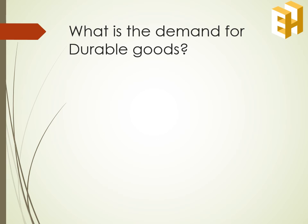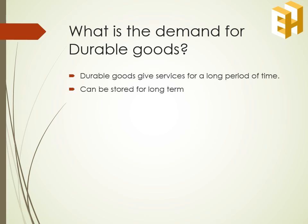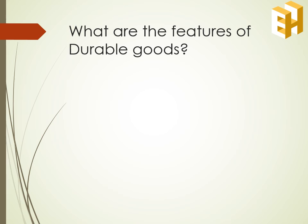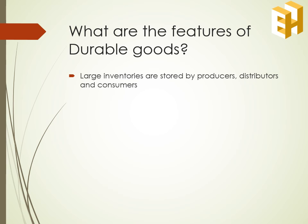What do we mean by the demand for durable goods? First, what are durable goods? These are the goods which give services for a long period of time, implying that they can be stored for the long term. As a result, they have a volatile demand, and the demand for such goods can be postponed. The features of durable goods are: they can be easily stored, so producers, distributors and consumers keep inventories or stock of those goods; and their replacement can be deferred — the demand for such commodities can be postponed.